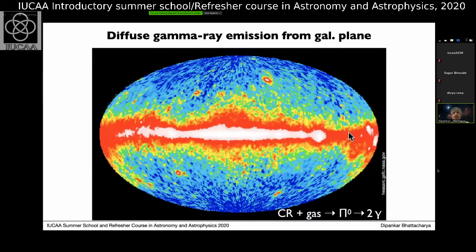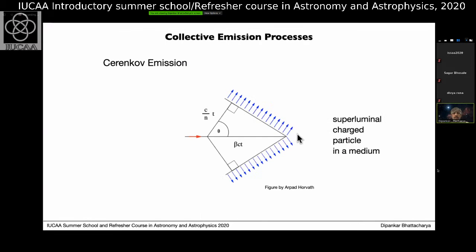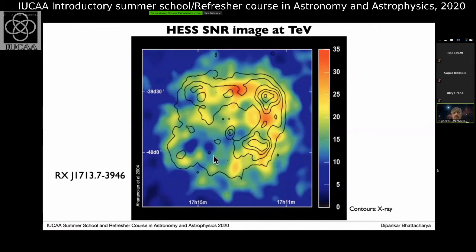Diffuse gamma-ray emission from our galactic plane is primarily generated by cosmic rays — fast protons scattering from gas, producing pi-zeros, which decay into gamma photons. Supernova remnants are also seen at tera-electron-volt gamma rays, primarily from inverse Compton emission as well as pi-zero decay.